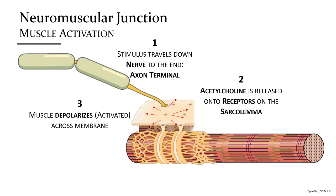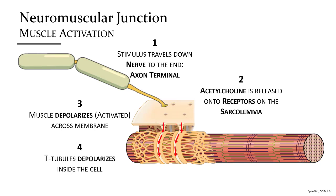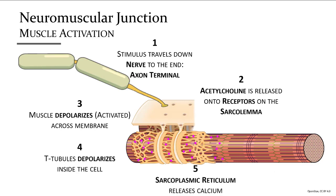This activated stimulus is then transmitted inside the cell via T-tubules, which are adjacent to the sarcoplasmic reticulum — the yellow web-like structure that contains calcium. The stimulus from the T-tubules causes the sarcoplasmic reticulum to release calcium, and it is this calcium that actually activates the muscle to start the contraction process.